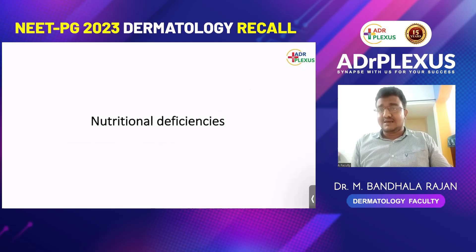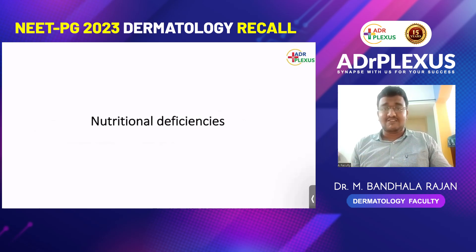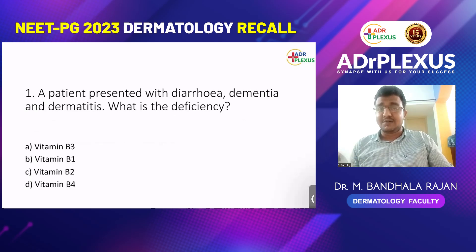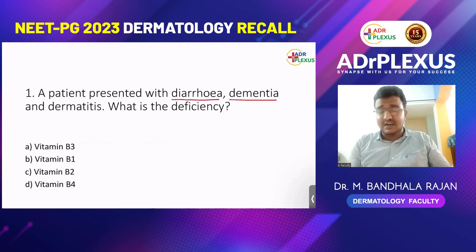We will start with the first question. I divided the questions based on the topics. First, we will see nutritional deficiencies. The first question: a patient presented with diarrhea, dementia, and dermatitis. What is the deficiency? The options given are vitamin B3, vitamin B1, vitamin B2, vitamin B4. The main clues are these three: diarrhea, dementia, and dermatitis — the three Ds.